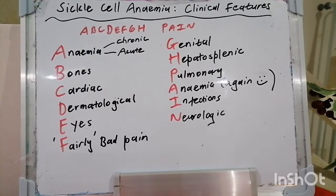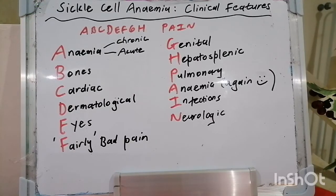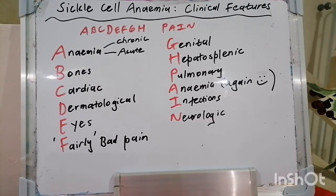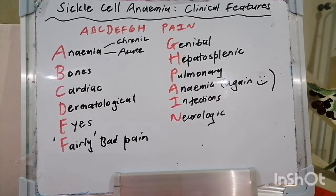Let's talk about sickle cell anemia. What is sickle cell disease and why do people get it? The pathophysiology behind sickle cell anemia is that there is a mutation in the beta globin chain which constitutes part of the hemoglobin molecule. Hemoglobin is made up of heme and globin, and heme is made up of iron and porphyrin. In sickle cell disease, it's the globin chain synthesis that has a problem. There's a mutation which leads to hemoglobin S, which then leads to polymerization of hemoglobin S and the formation of elongated fibers that distort the shape of the red blood cell.